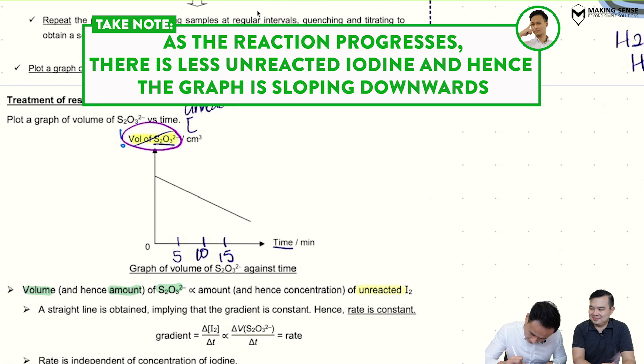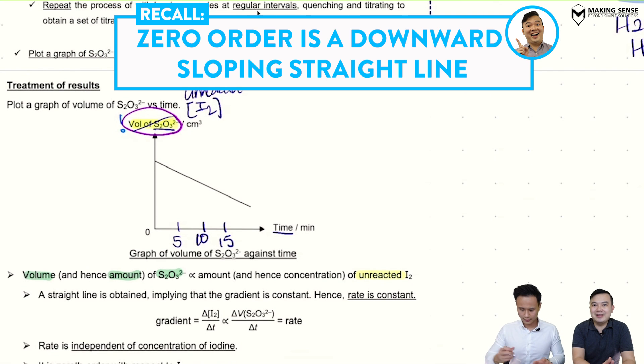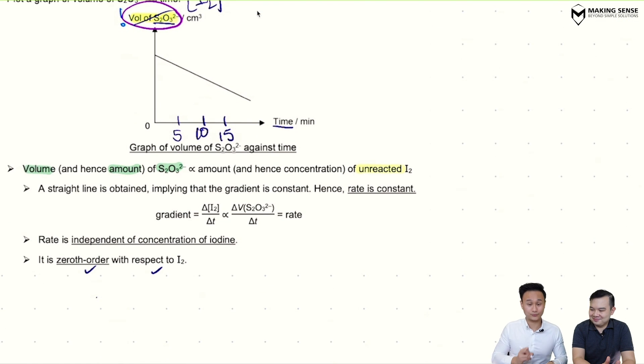And Mr. Leong, looking at the shape of this curve or this line, what order does it tell you? It's a downward sloping straight line, it must be zero order with respect to I2. Exactly. So you can see here: zero order with respect to I2. So this was a continuous method.